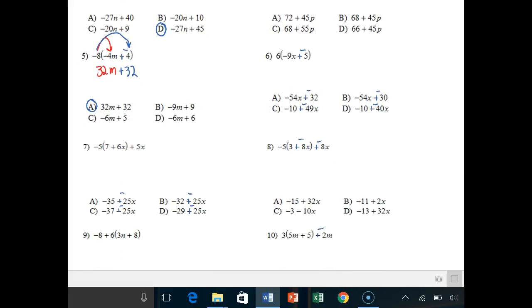Number 7, we both have to distribute and combine like terms. So negative 5 times 7, that gives me negative 35, plus negative 5 times 6, that gives me negative 30x. You do not multiply all the way to the 5x. You only multiply what's inside the parentheses. So you just bring down your plus 5x. You do not multiply that, you just bring that on down.